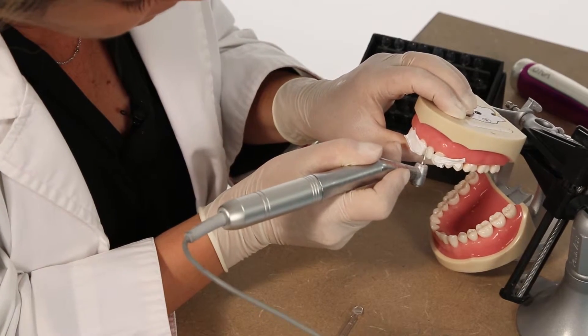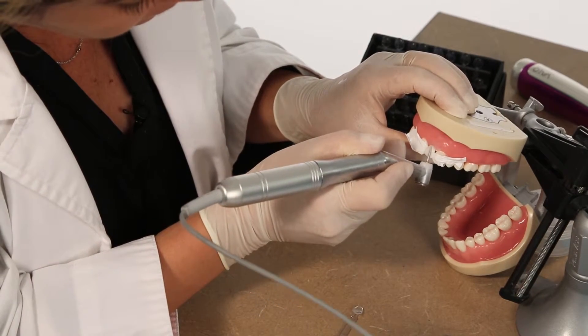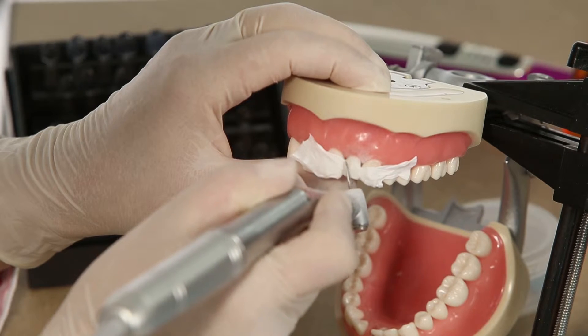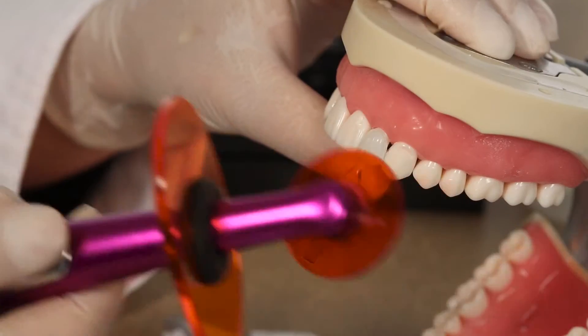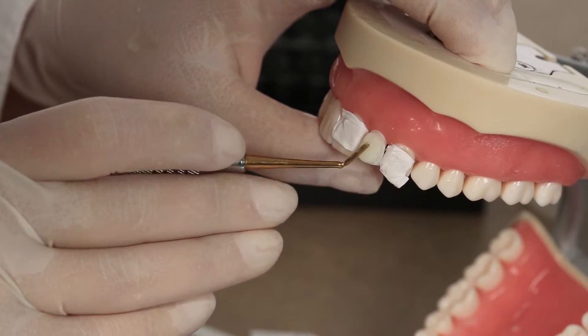Some restorations may require an additional layer of composite. In this case, roughen the cured composite with a diamond burr, bond, cure, and repeat the process.